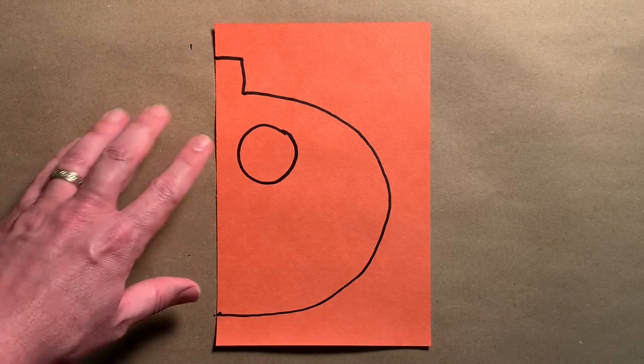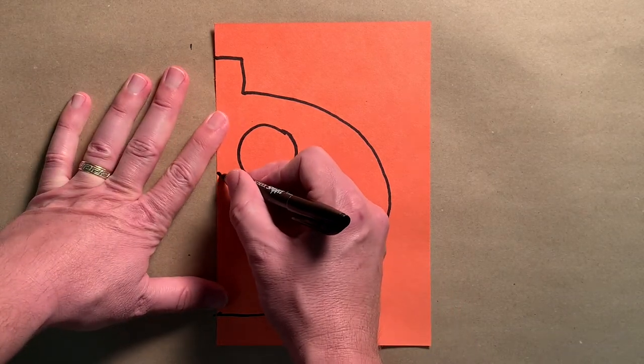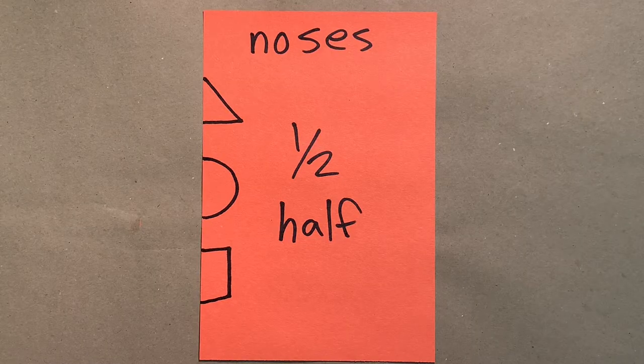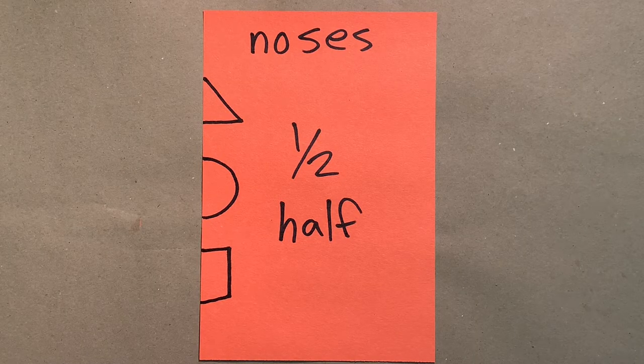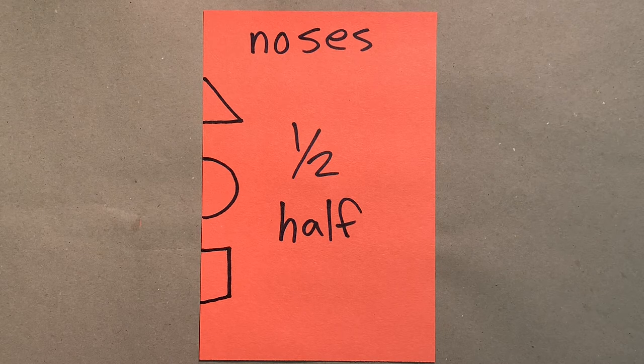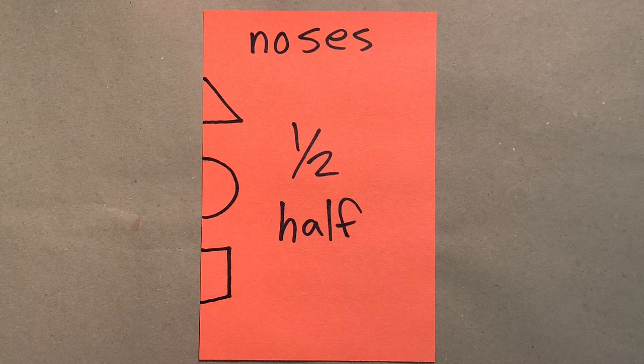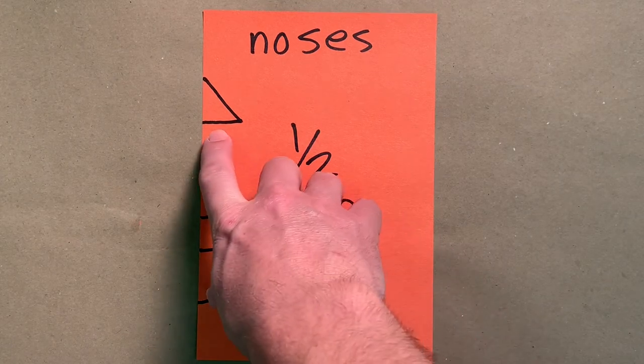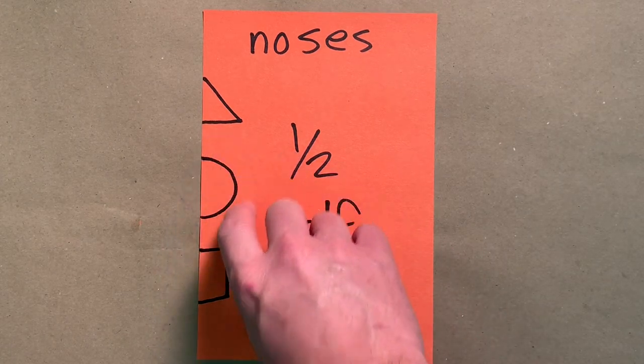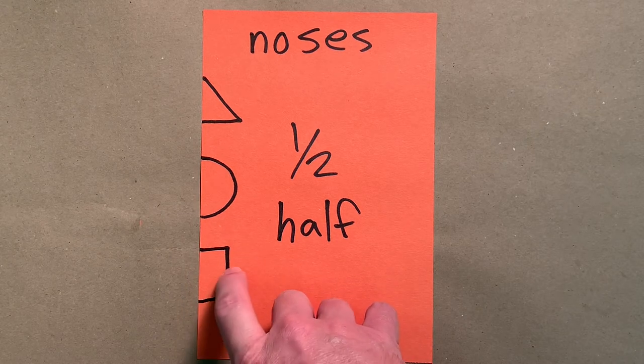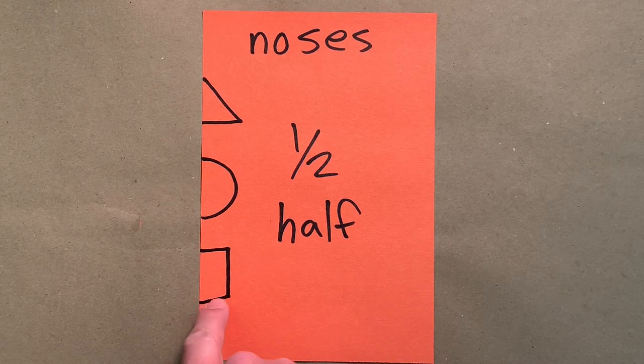Next, on the edge of the paper, I'm going to draw half of a nose shape. Here are examples of noses you could use for your jack-o-lantern. Just like on the mouth, we're only drawing half of the nose. If you want a triangular nose, you draw half of a triangle. If you want a circle nose, half a circle. And if you want a square or rectangular nose, draw half of that.